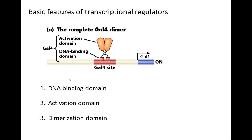The GAL4 protein is actually a dimer — two GAL4 proteins bind together. It has two primary important parts: a DNA binding domain and an activation domain, as well as a dimerization domain that allows the two proteins to bind together.